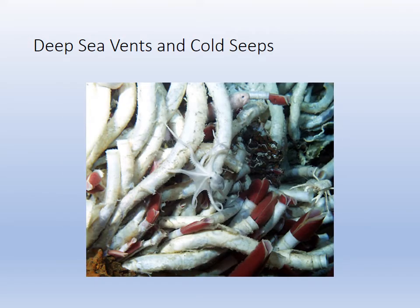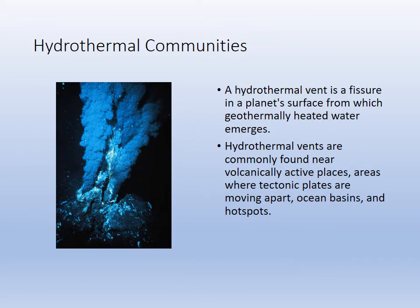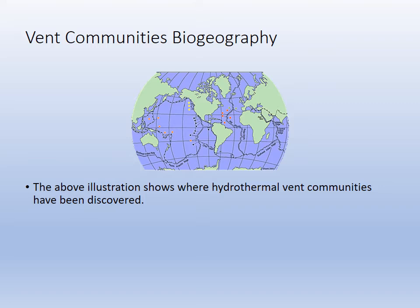Deep sea vents are totally dark — without photosynthesis, they use chemosynthesis to power these climax communities at the bottom of the ocean. Cold seeps have mineral water coming out; mid-ocean ridge volcanoes provide heat and nutrients. Hydrogen sulfide comes out, is metabolized by bacteria, and that's a vent community climax. Vent communities are found on the mid-ocean ridges, and the bottom of the ocean is fairly inaccessible.